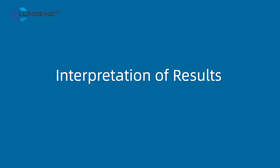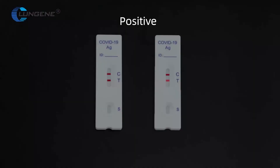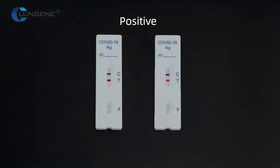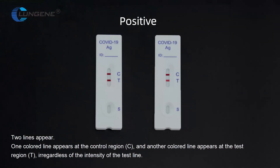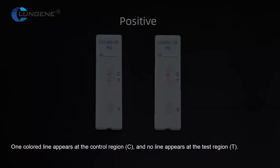Interpretation of Results — Positive: Two lines appear. One color line appears at the control region and another color line appears at the test region, regardless of the intensity of the test line.